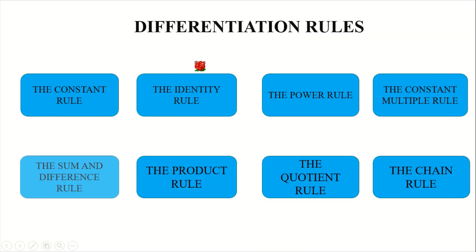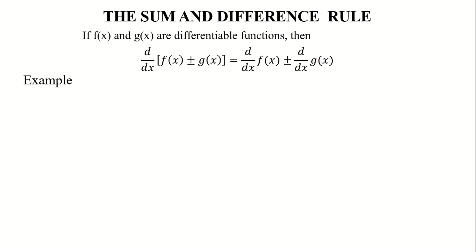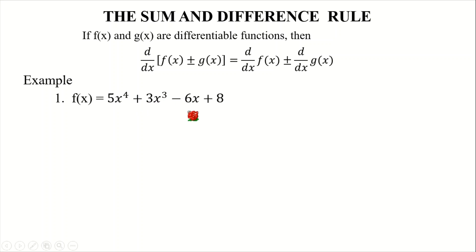Let's start. Sum and Difference Rule: if f(x) and g(x) are differentiable functions, then d/dx [f(x) ± g(x)] is equal to d/dx f(x) ± d/dx g(x). So for functions separated by plus or minus, what you will do is get the derivative of each one of them before you perform the plus or minus operation. For example, we have f(x) = 5x⁴...